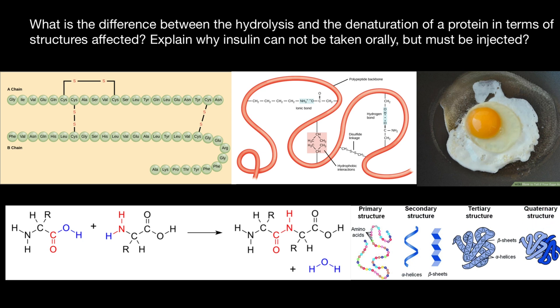An example of the quaternary structure would be insulin, which consists of two polypeptide chains connected by two disulfide bridges. Of course, on this picture just the linear form of each polypeptide is shown.